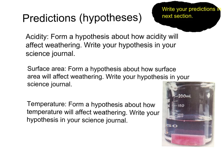For each of the different variables — acidity, surface area, and temperature — I want you to write a prediction. What do you think will happen in the experiment comparing vinegar and water? What do you think will happen comparing chalk of different piece sizes? And what do you think will happen comparing the weathering of chalk at different temperatures? Don't copy this — just write down what you think will happen.